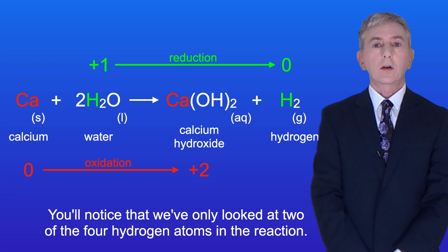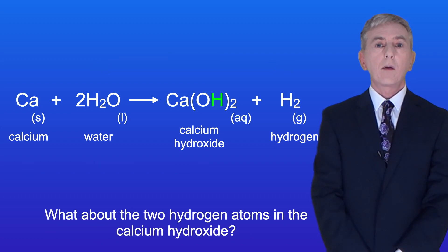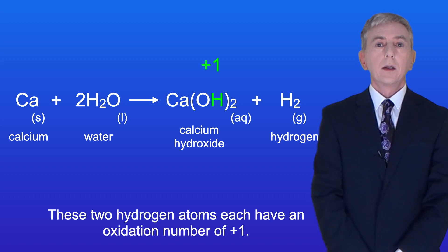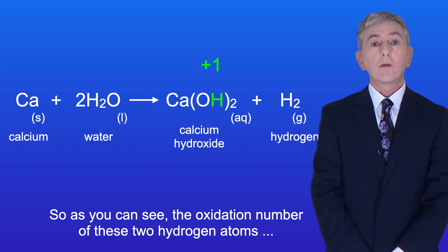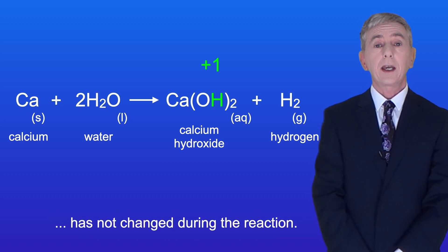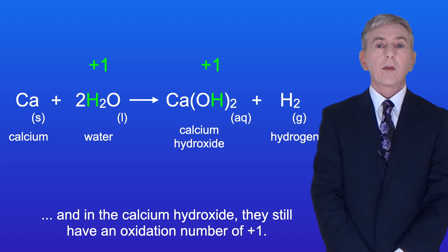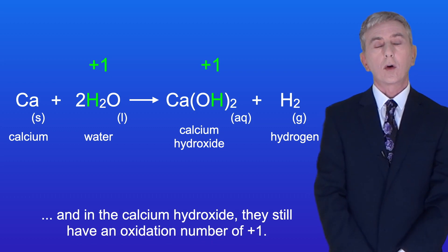Now you'll notice that we've only looked at two of the four hydrogen atoms in the reaction. So what about the two hydrogen atoms in the calcium hydroxide? Well these two hydrogen atoms each have an oxidation number of plus one. So as you can see, the oxidation number of these two hydrogen atoms has not changed during the reaction. In the water, they had an oxidation number of plus one, and in the calcium hydroxide, they still have an oxidation number of plus one.